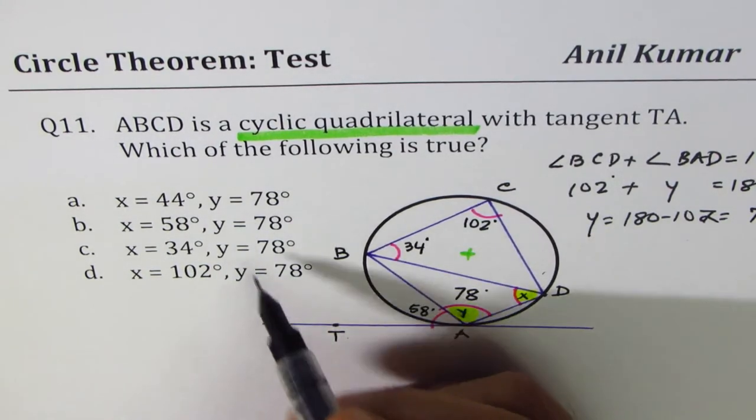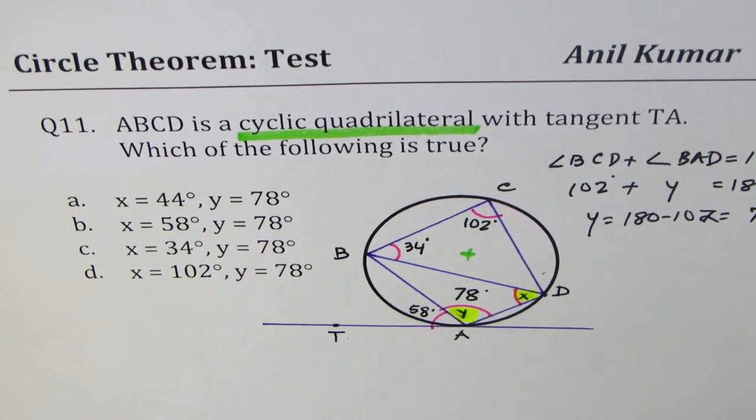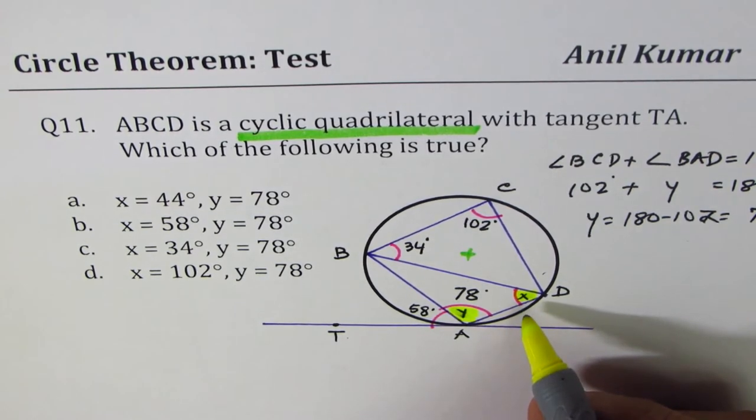So Y values 78 as you can see in all the four cases. Let's figure out what X is. Now, you can find X using another theorem or rule.